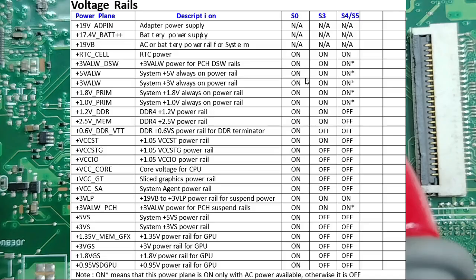These always-on voltages are present in S4, S5, S3, and all states once you connect the adapter — that's why you see the asterisk. They are present when AC power is available, but with battery only you cannot find them — they will show off, off, off.